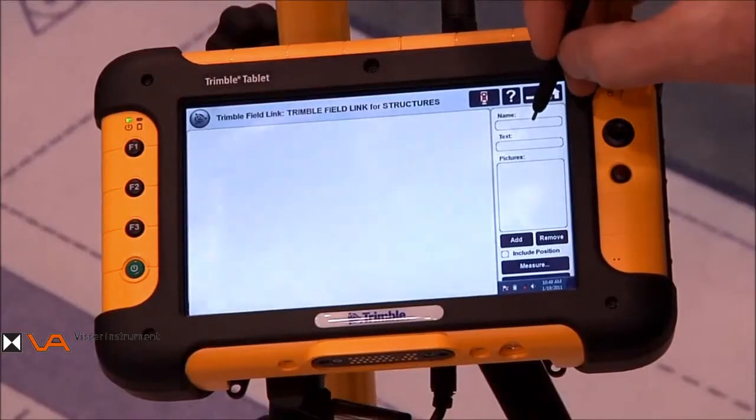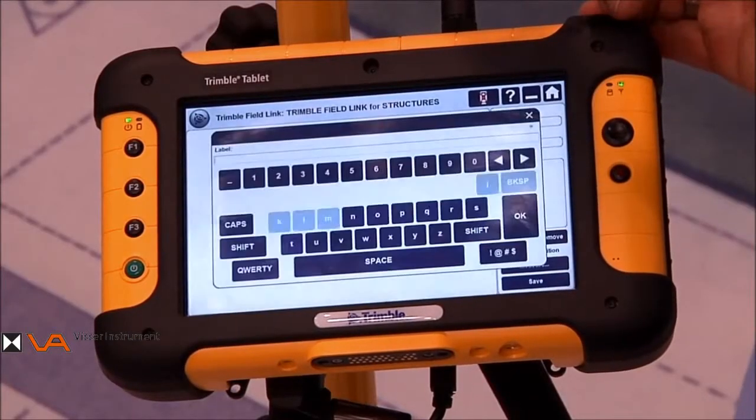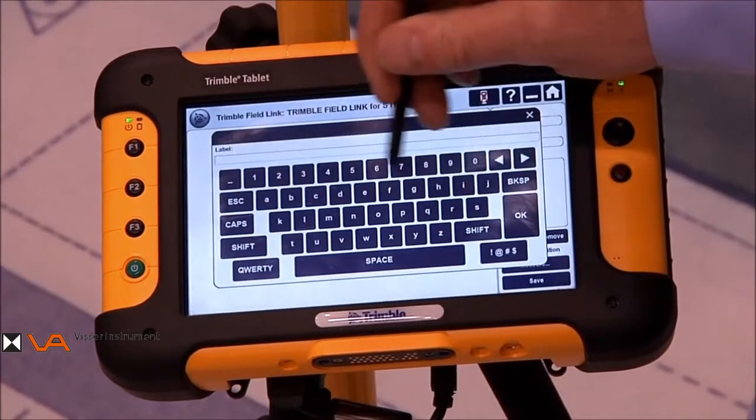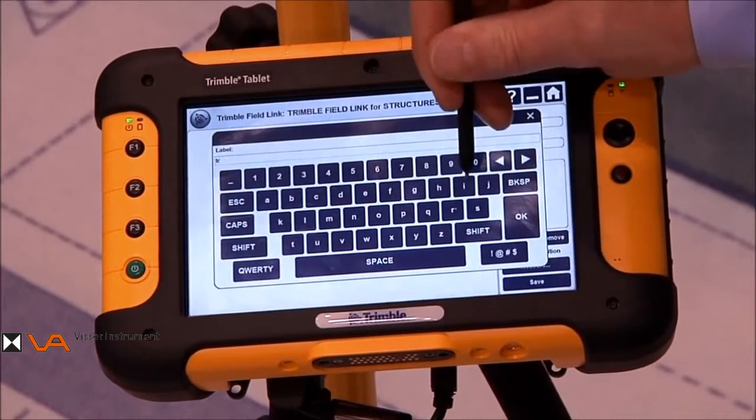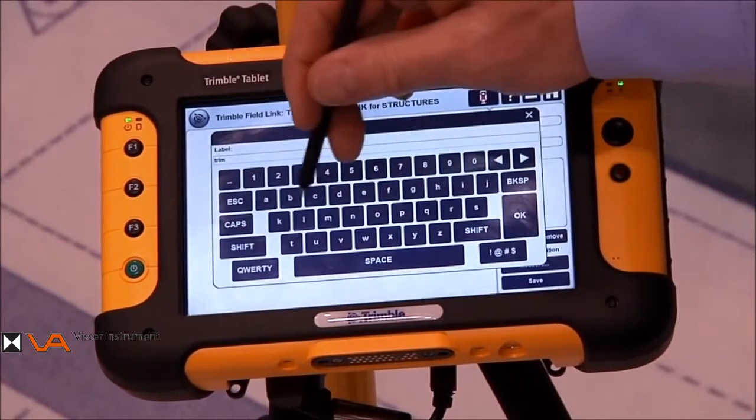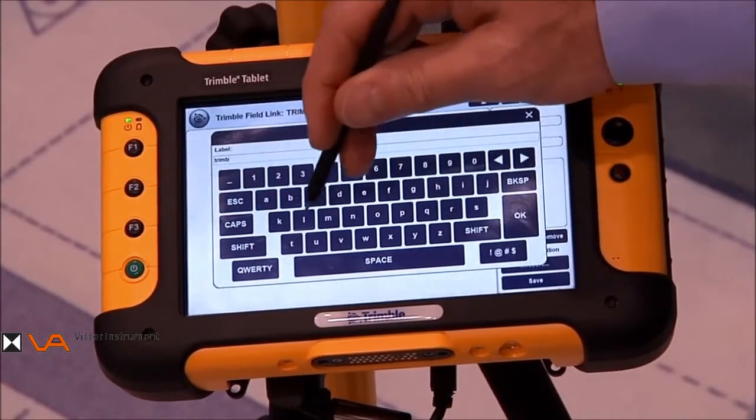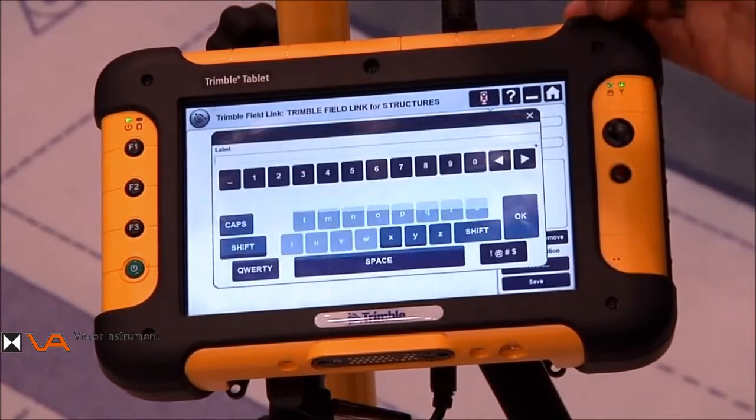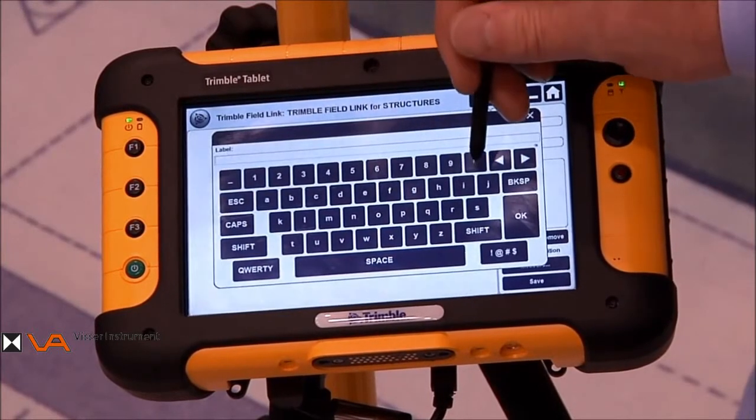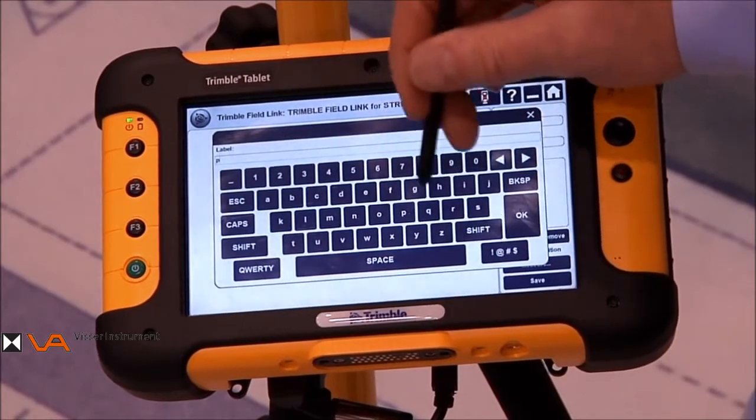The way we access this is we simply type in the name of the report that we'd like to create. In this case, we'll call this report Trimble. We can also type in some text, and we can type in anything we'd like to. In this case, we'll just call it problem.